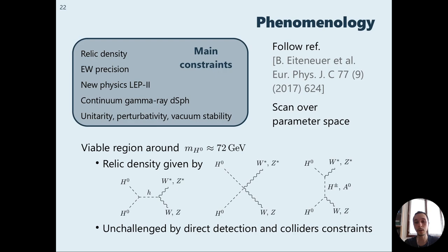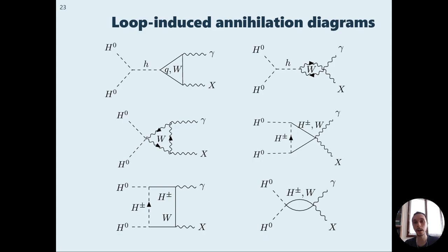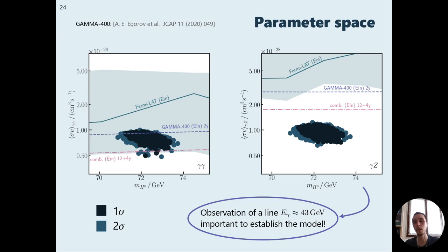These are the loop induced annihilation diagrams. I mean these are an example of the main loop induced annihilation diagrams. Indeed we have far a lot more diagrams with respect to the other case. We have considered the gamma gamma and gamma z final states as in this case the gamma Higgs cross section resulted to be suppressed.